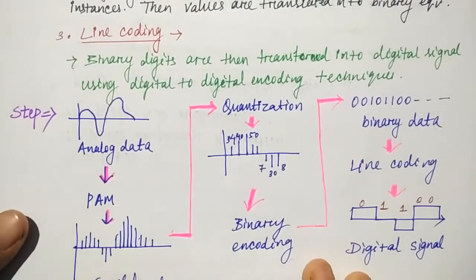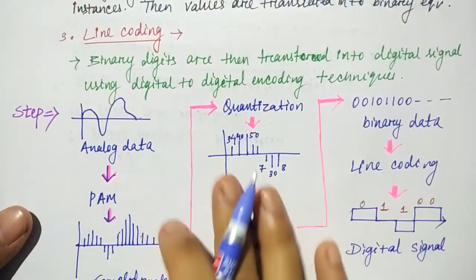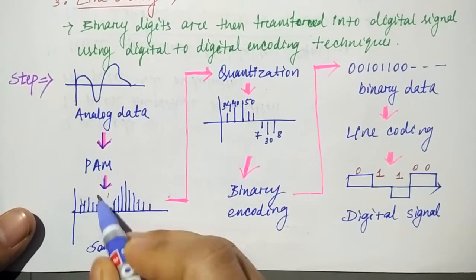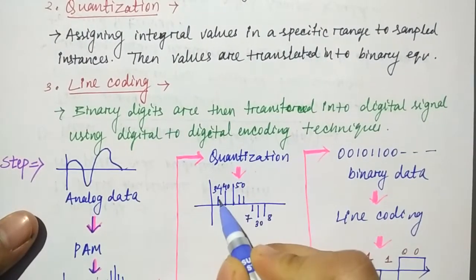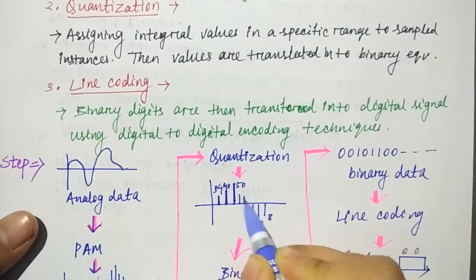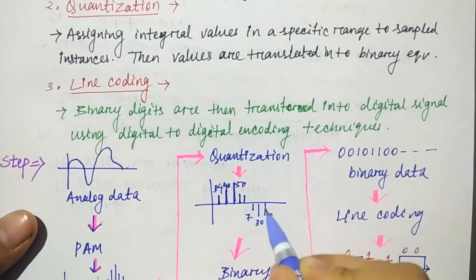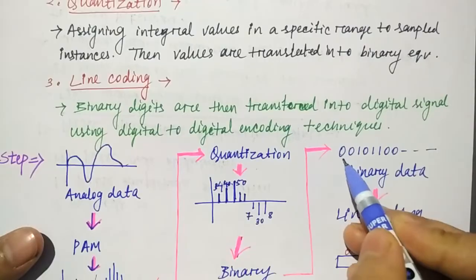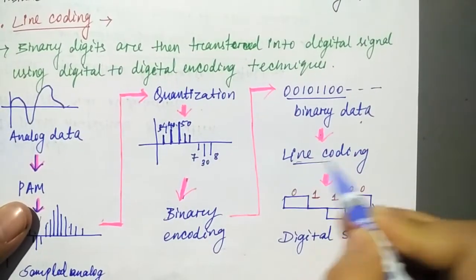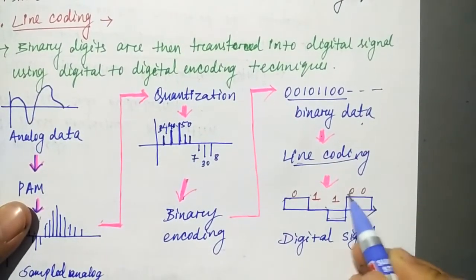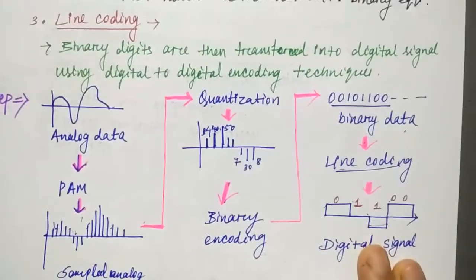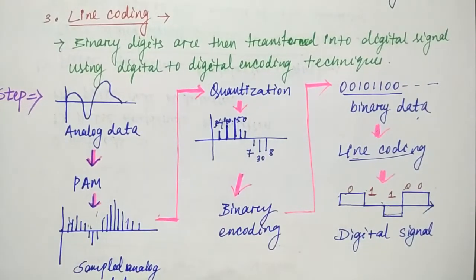So basically, what is happening in Pulse Code Modulation: analog data is received, Pulse Amplitude Modulation sampling is performed, then in quantization each pulse is assigned an integer value, the integer value is binary encoded, and finally the binary data is converted through line coding techniques. This is the process you have to follow for Pulse Code Modulation.